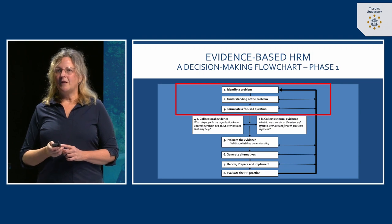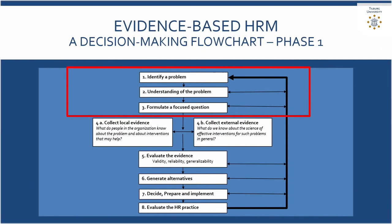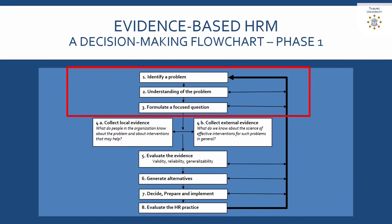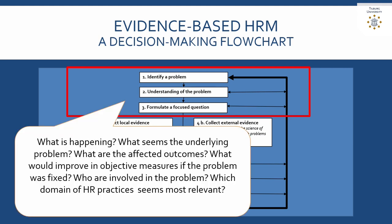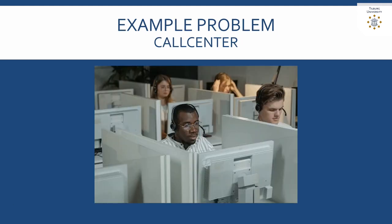The first part of the process is about problem identification — really understanding what the nature of the problem in the organization is and formulating a question that will guide the evidence-based information collection and the building of an intervention. Some key questions to ask are: What is happening? What seems to be the underlying problem? What are the affected outcomes? What would improve in objective measures if the problem was fixed? Who is involved, and which domain of HR practices seems most relevant?